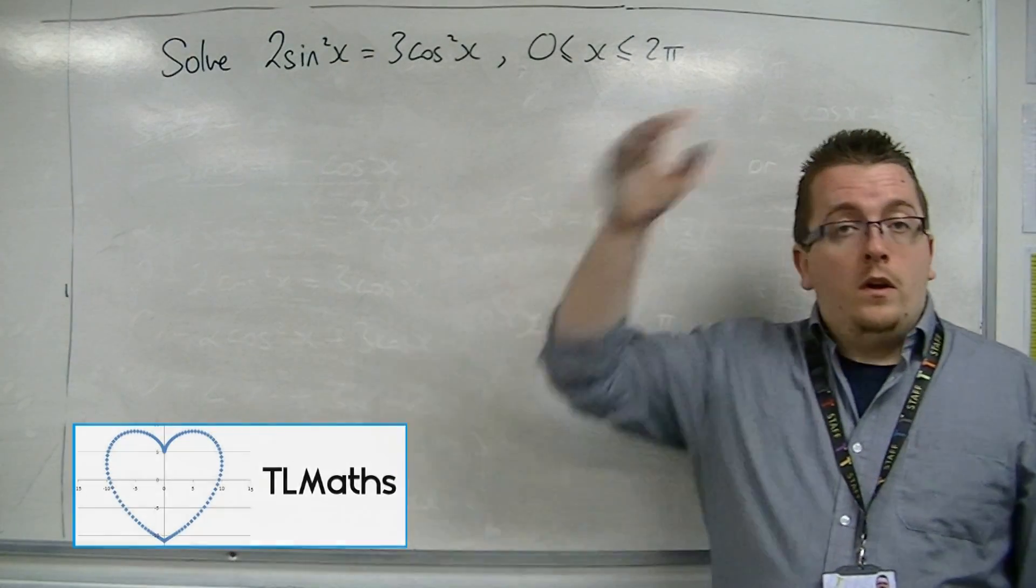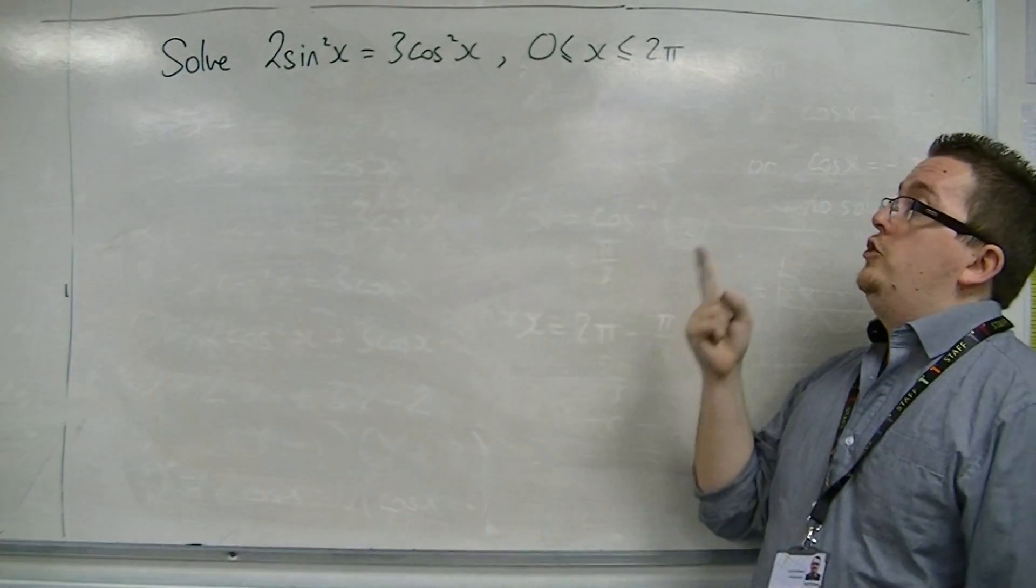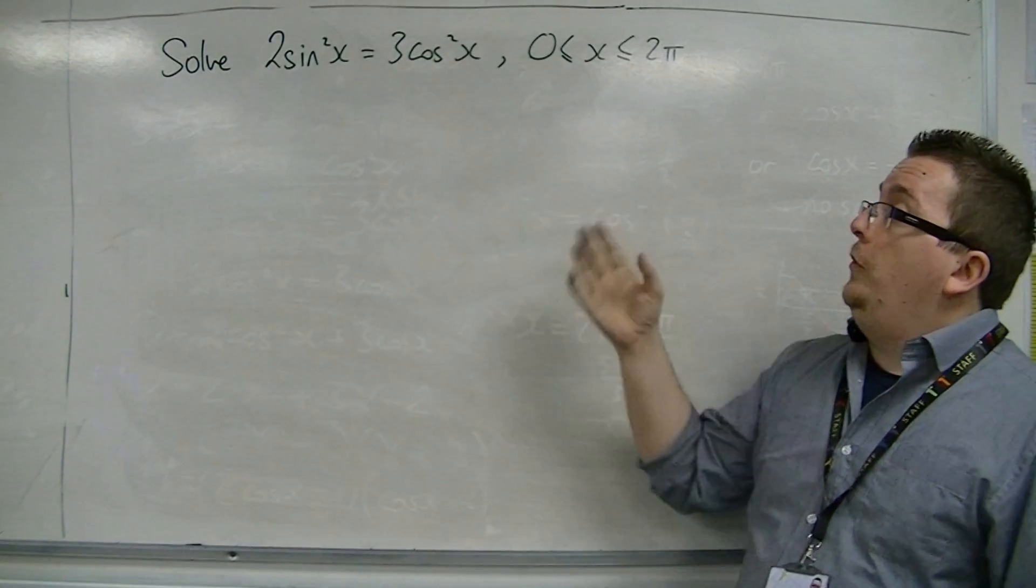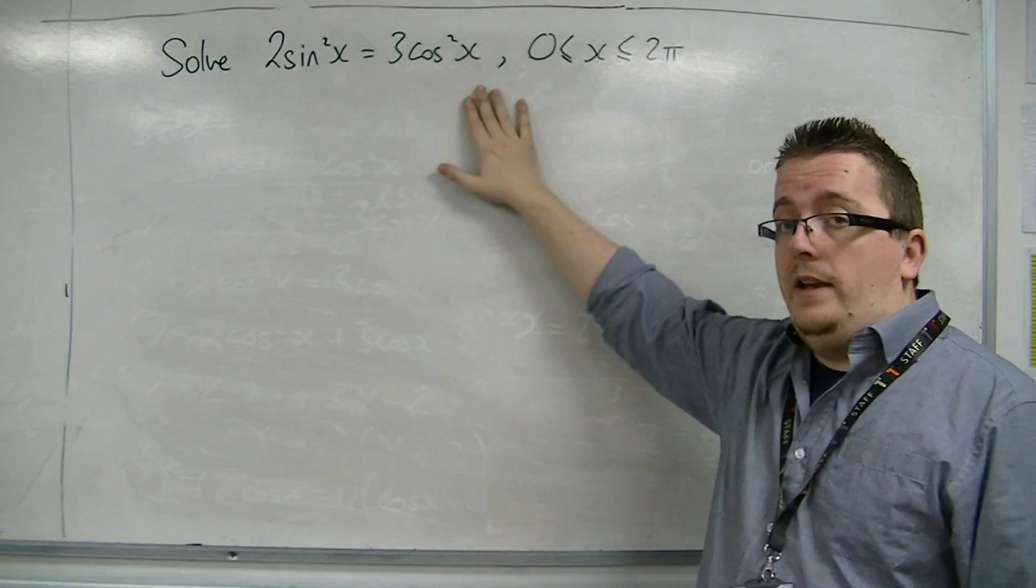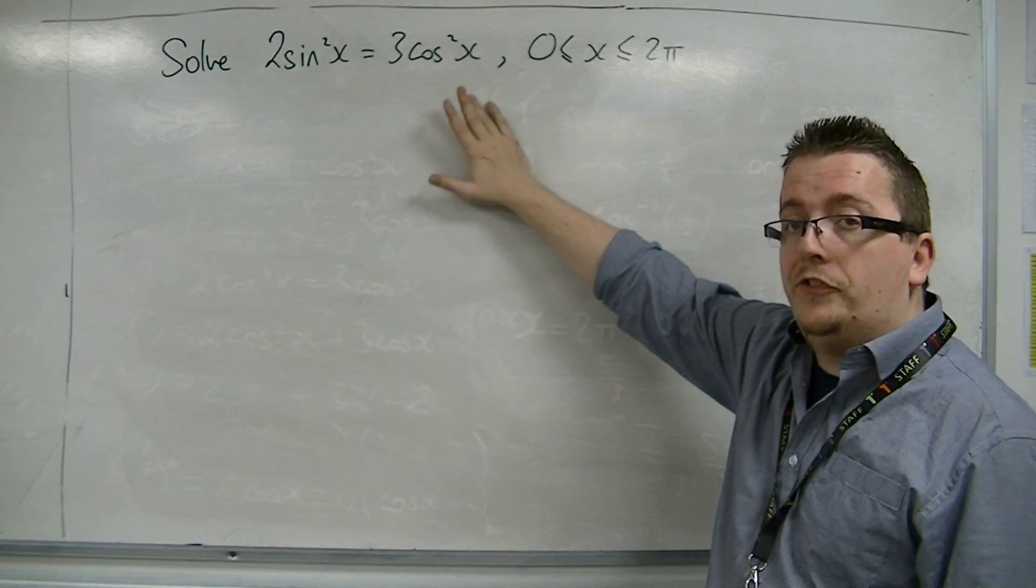In the previous video, I solved a very similar looking equation to this one. It was 2 sine squared equals 3 cos x. Now we have 2 sine squared equals 3 cos squared x.